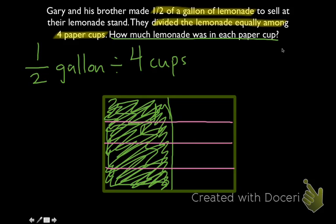Now I want to figure out how much lemonade was in each paper cup. So let's see how many parts are shaded. We have 1, 2, 3, 4, which tells us that we've successfully divided our half gallon into 4 groups. For each group we have just 1. That tells us our numerator. And how many total parts do we have? Let's show that in red. We have 1, 2, 3, 4, 5, 6, 7, 8. We have 8.